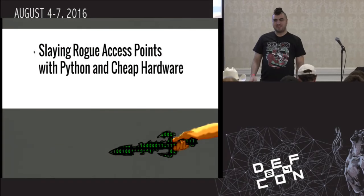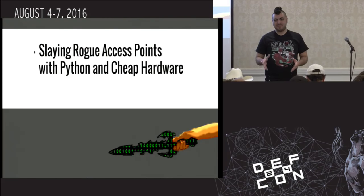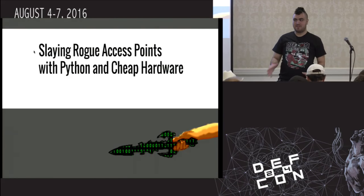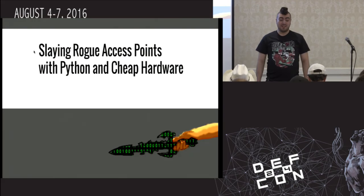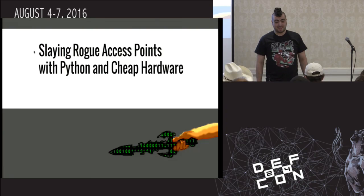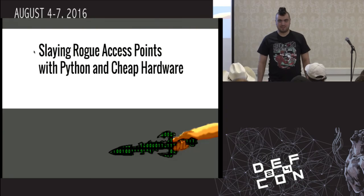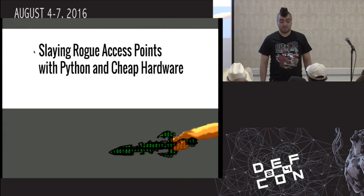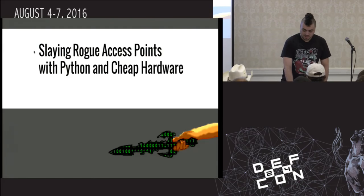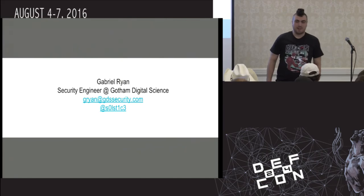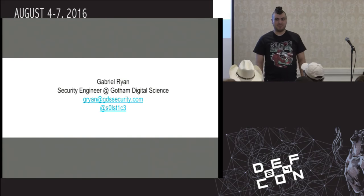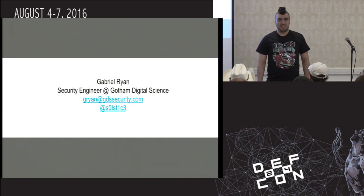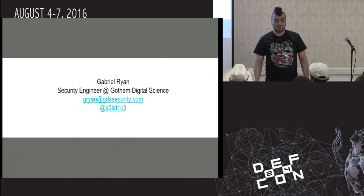This talk is about rogue access point attacks, but more on the defensive side. We go into some of the offensive stuff, but a lot of that's already been done before. This is more of a talk on how to identify rogue AP attacks and also some preventive measures you can use to mitigate them. I'm Gabriel Ryan, a security engineer at Gotham Digital Science. We do pen testing and secure source review, stuff like that.